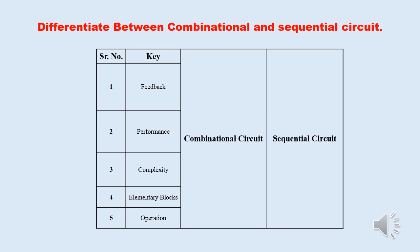Operation: combinational circuits are mainly used for arithmetic as well as boolean expression operations. On the other hand, sequential circuits are mainly used for storing data.